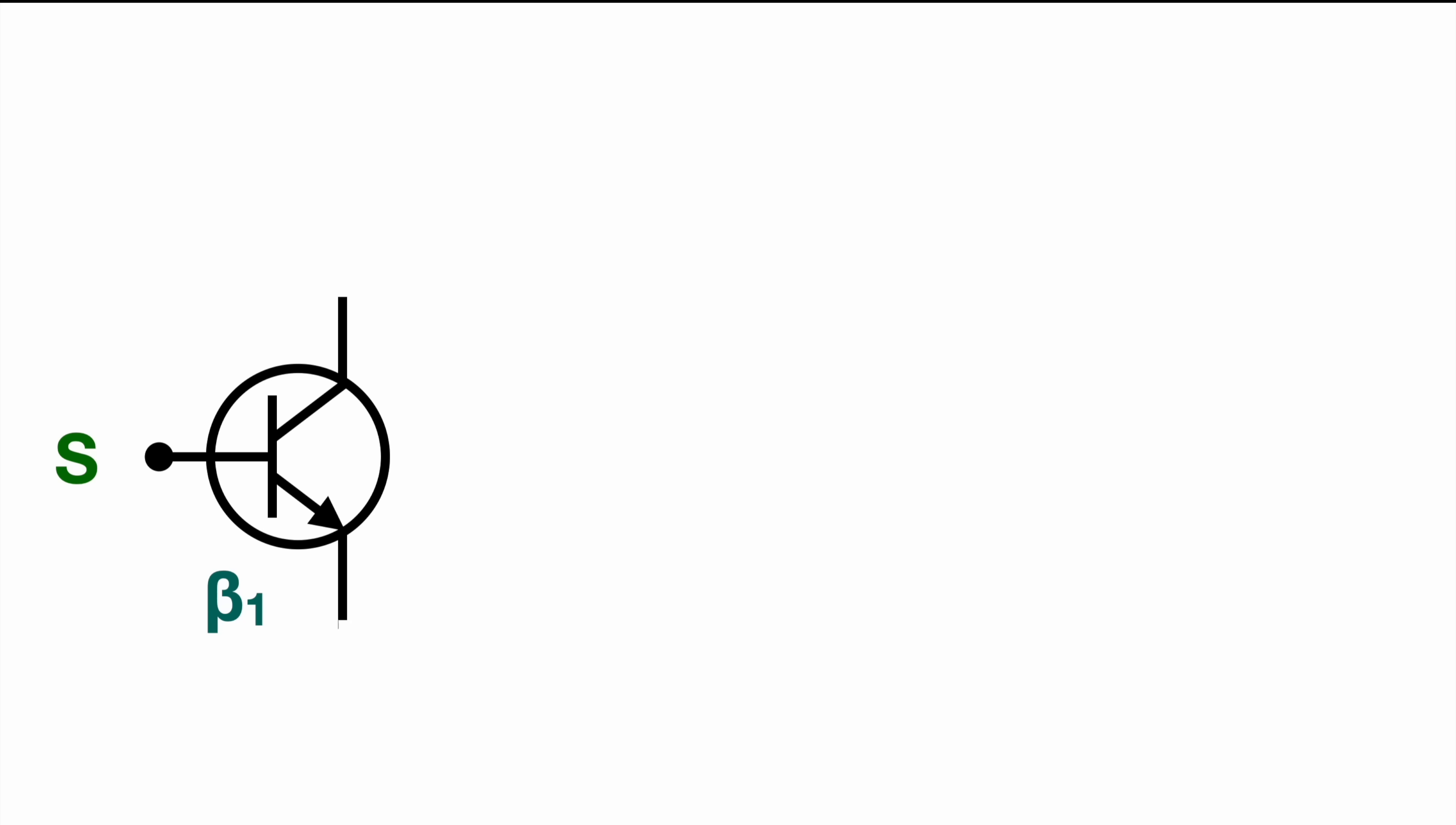The Darlington transistor itself is actually not one transistor, it's basically two transistors chained together. In order to achieve a higher amplification, it's basically utilizing the gain of the first and the second transistor combined.